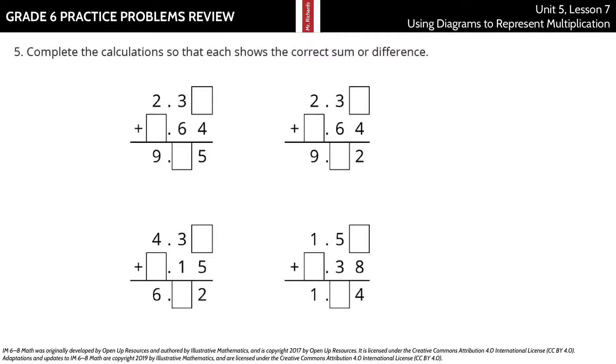In a review question, complete the calculations so that each shows the correct sum or difference. Well, we add from right to left. And so to have a result of 5, what must have been in the box here to add to 4? 1 plus 4 is 5. 3 plus 6 is 9. Nothing being carried over to the ones spot. So 2 plus how many ones is going to get me 9 ones? Well, 7.